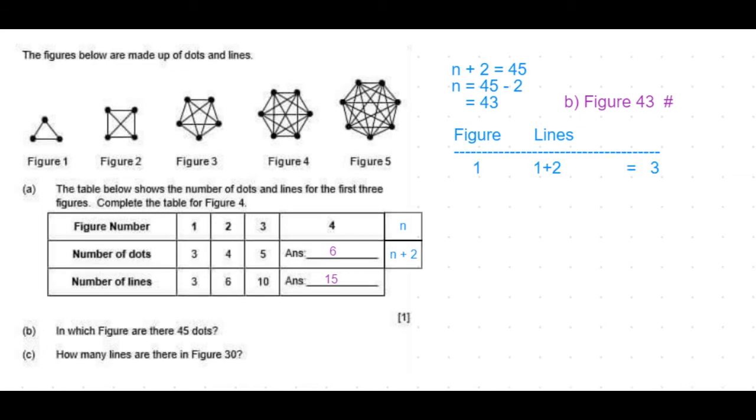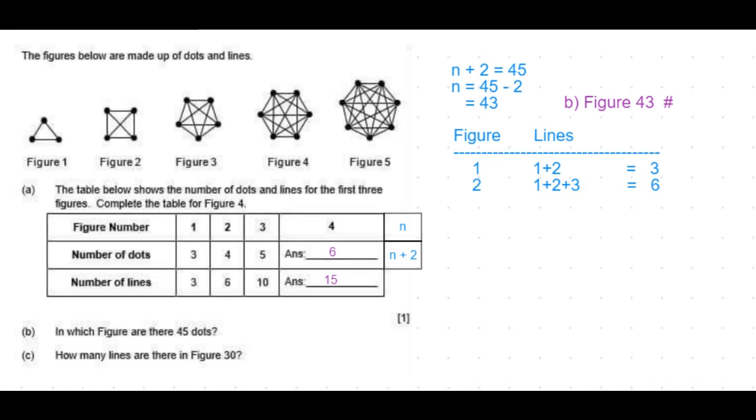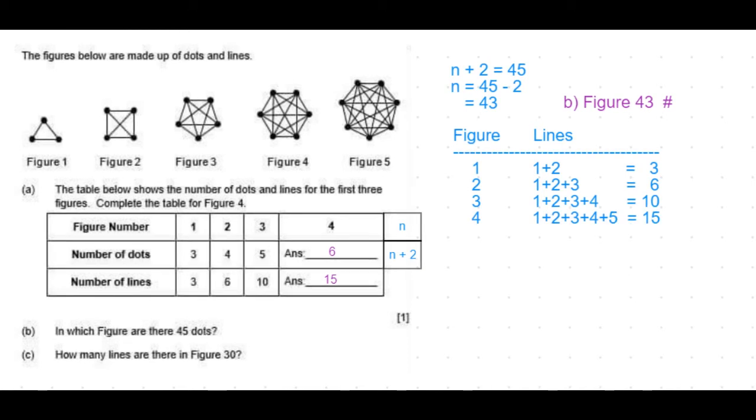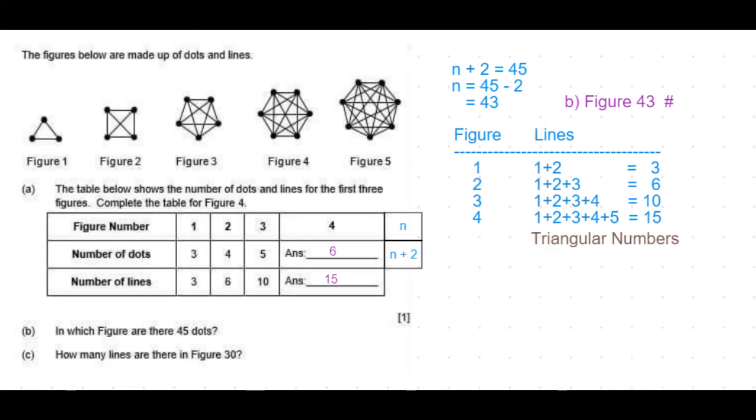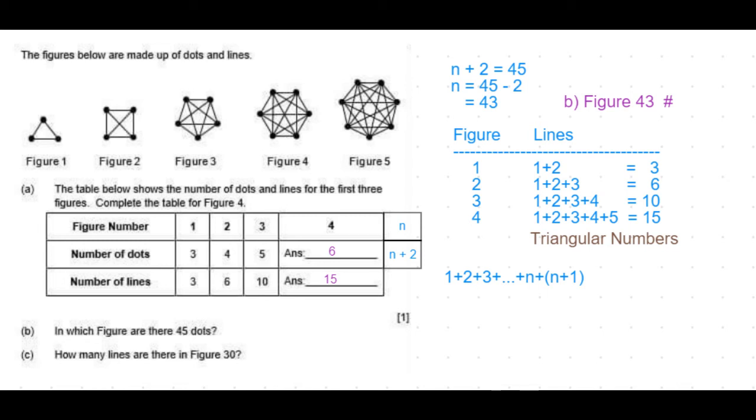For figure one there are three lines which is 1 plus 2. Figure two has six lines which is 1 plus 2 plus 3. For figure three there are 10 lines which is 1 plus 2 plus 3 plus 4. For figure four the answer is 15 lines, adding up 1 to 5. These sequence of numbers are called triangular numbers. They add up as 1 plus 2 plus 3 until plus n. In this case the last number is one more than the figure number.